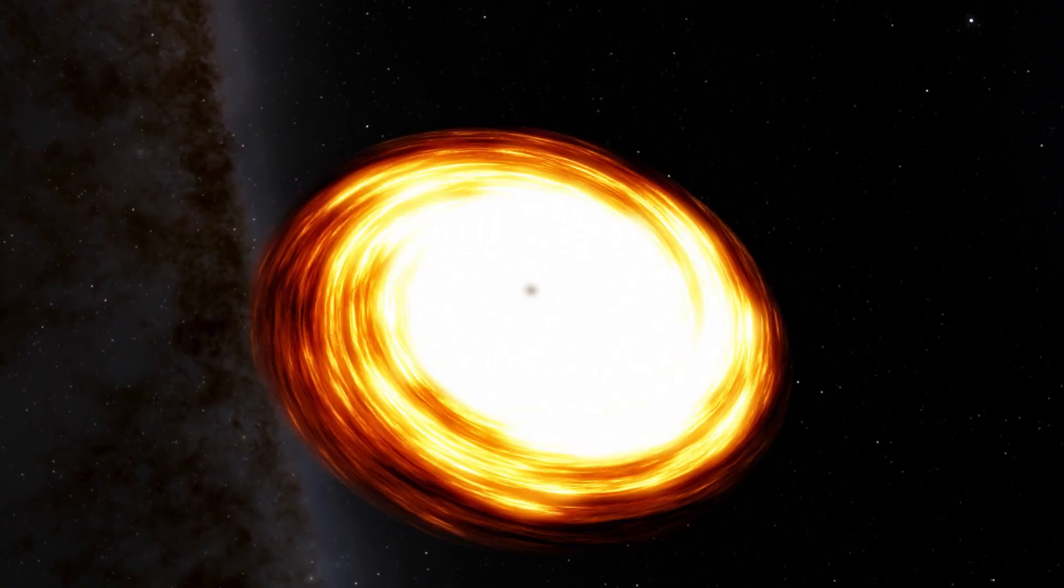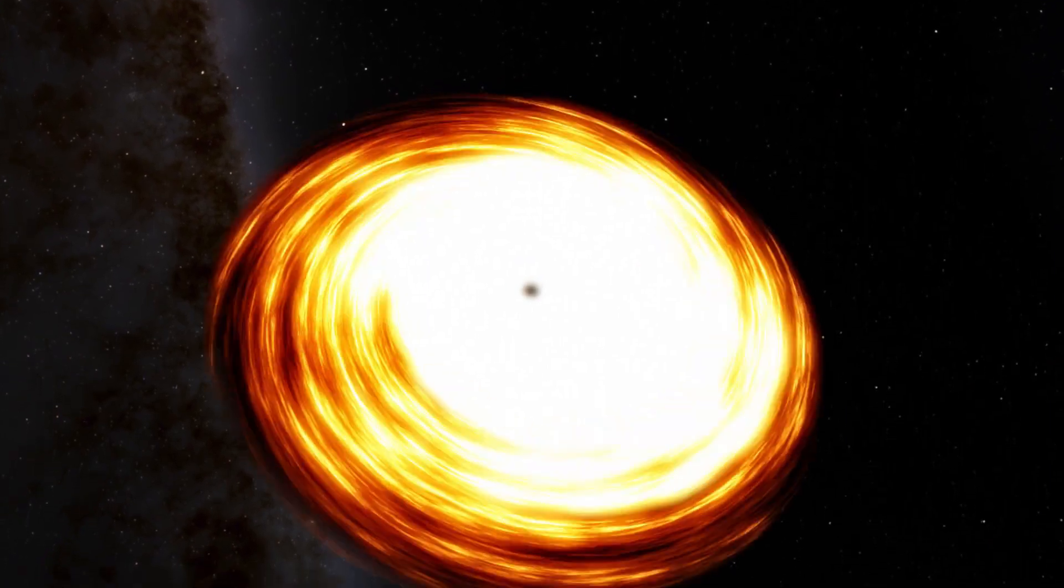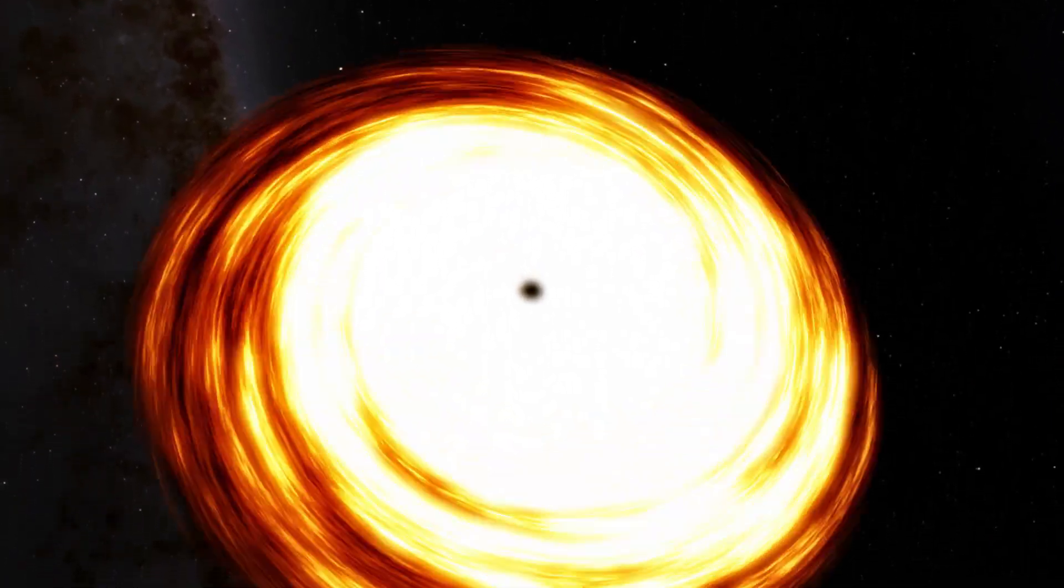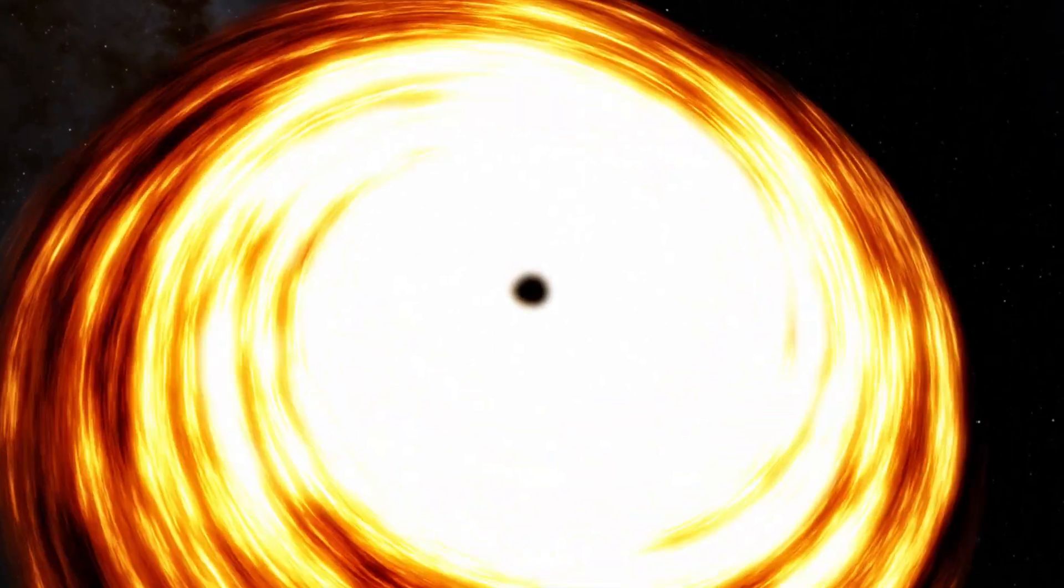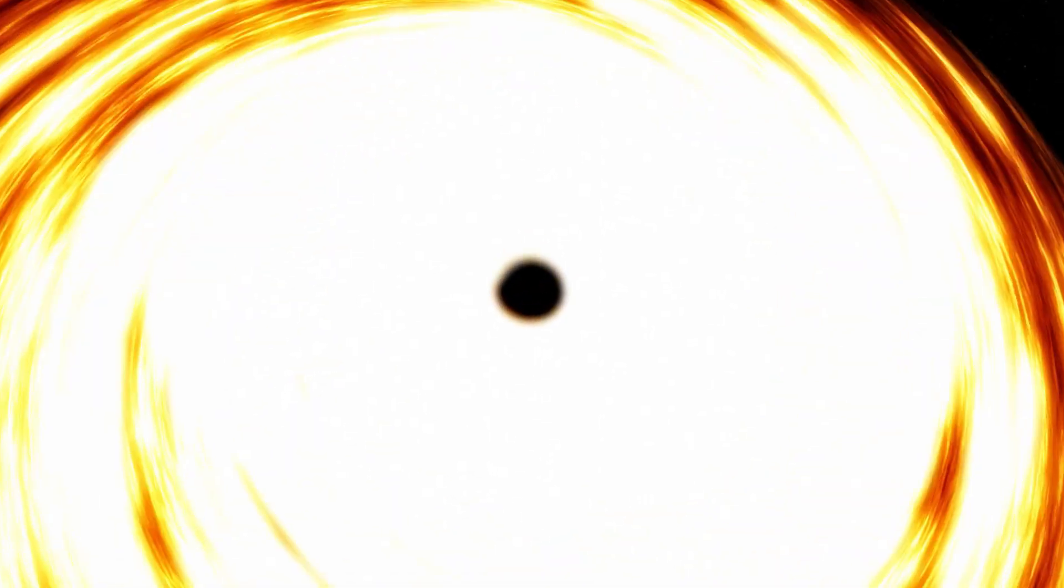The smallest black hole we know is only 3.8 times the mass of our Sun and is only 15 miles or 24 kilometers in diameter, discovered by NASA.